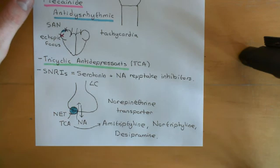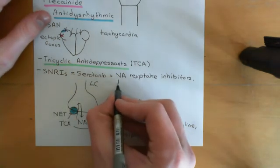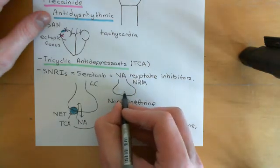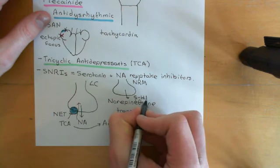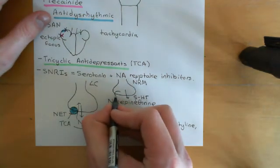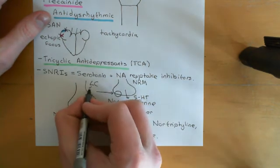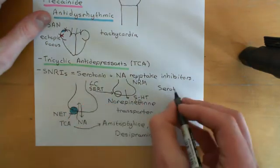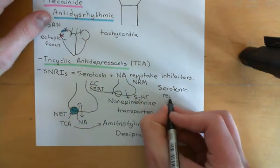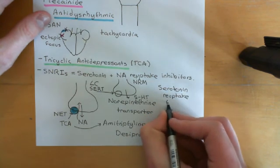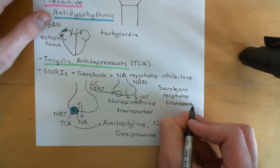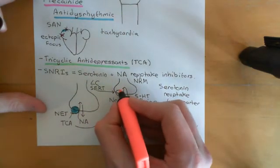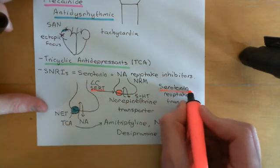The SNRIs operate on a very similar concept, but do more than just block the norepinephrine transporter — they also block the equivalent transporter for the serotonergic neurons coming down from the nucleus raphe-magnus. These neurons release serotonin 5-HT onto the enkephalin-containing interneurons. To terminate that signaling, there is a transporter that reabsorbs the serotonin known as the SERT — serotonin reuptake transporter — where SE stands for serotonin, R for reuptake, and T for transporter. This SERT re-transports serotonin molecules back into the cytoplasm of the axon terminal.